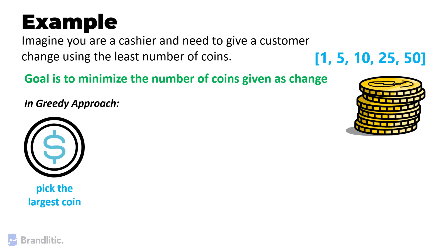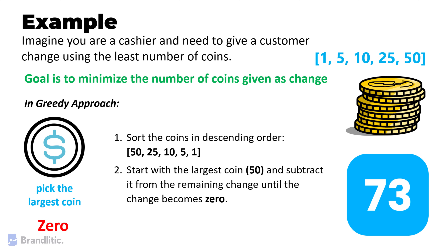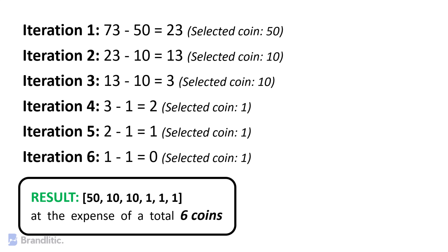Repeat the process until the change becomes 0. If the change is 73, the greedy algorithm would first sort the coins in descending order — that is 50, 25, 10, 5, and 1 — then start with the largest coin, 50, and subtract it from the remaining change until it becomes 0. Here's how it will go. As a result, the greedy algorithm returns 50, 10, 10, 1, 1, 1, 1 — a total of 6 coins.